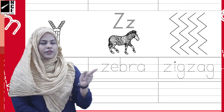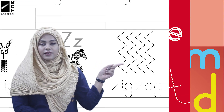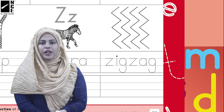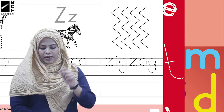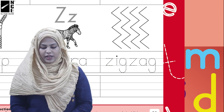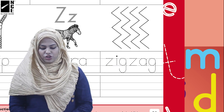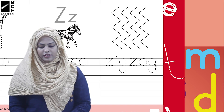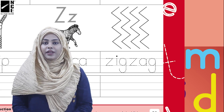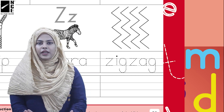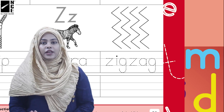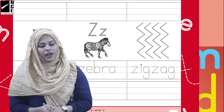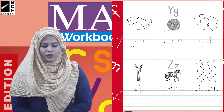The next picture is zigzag — yeh zigzag lines bani hoi hai. We will trace it with the help of a pencil. The spelling of zigzag is Z-I-G-Z-A-G. That was so easy!